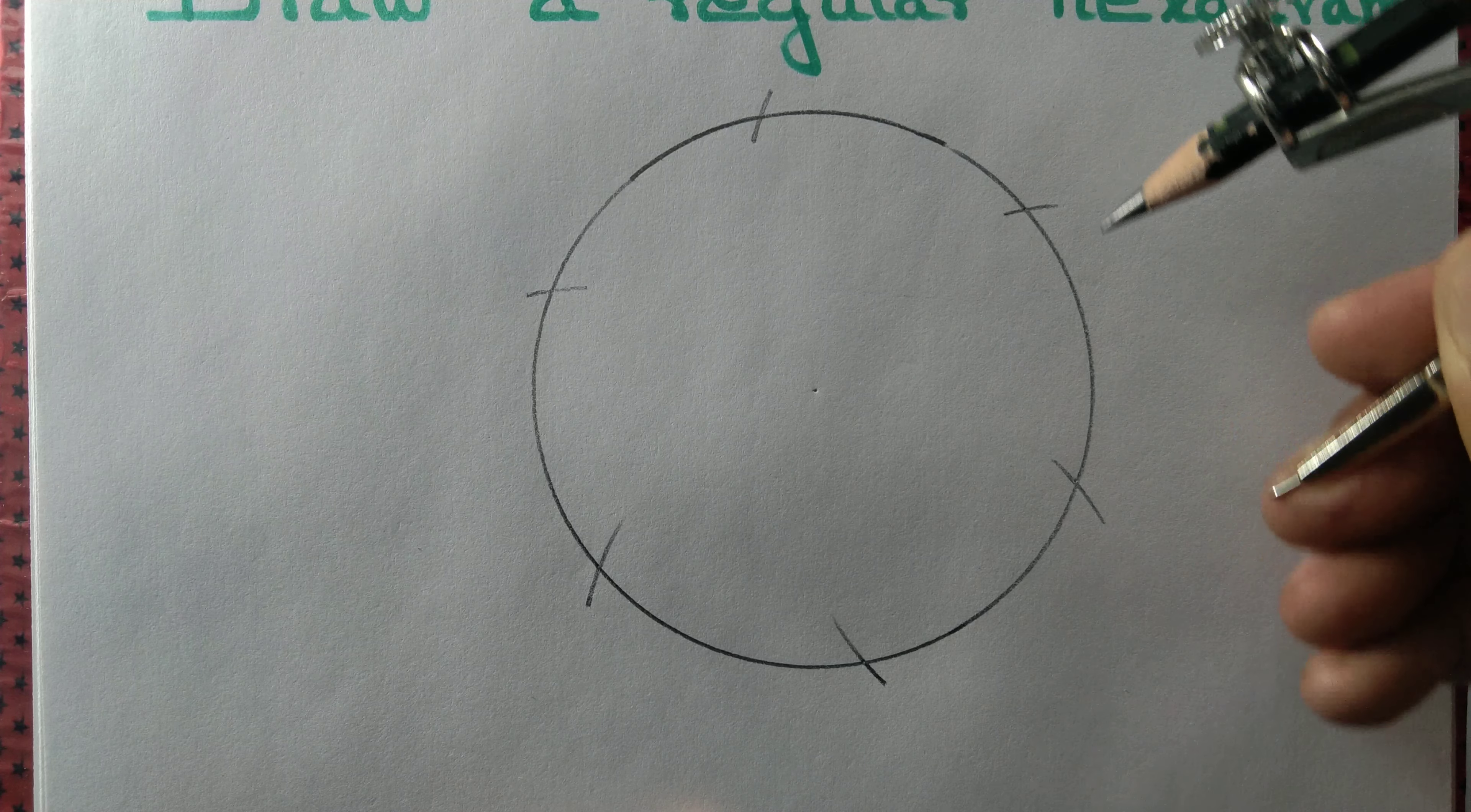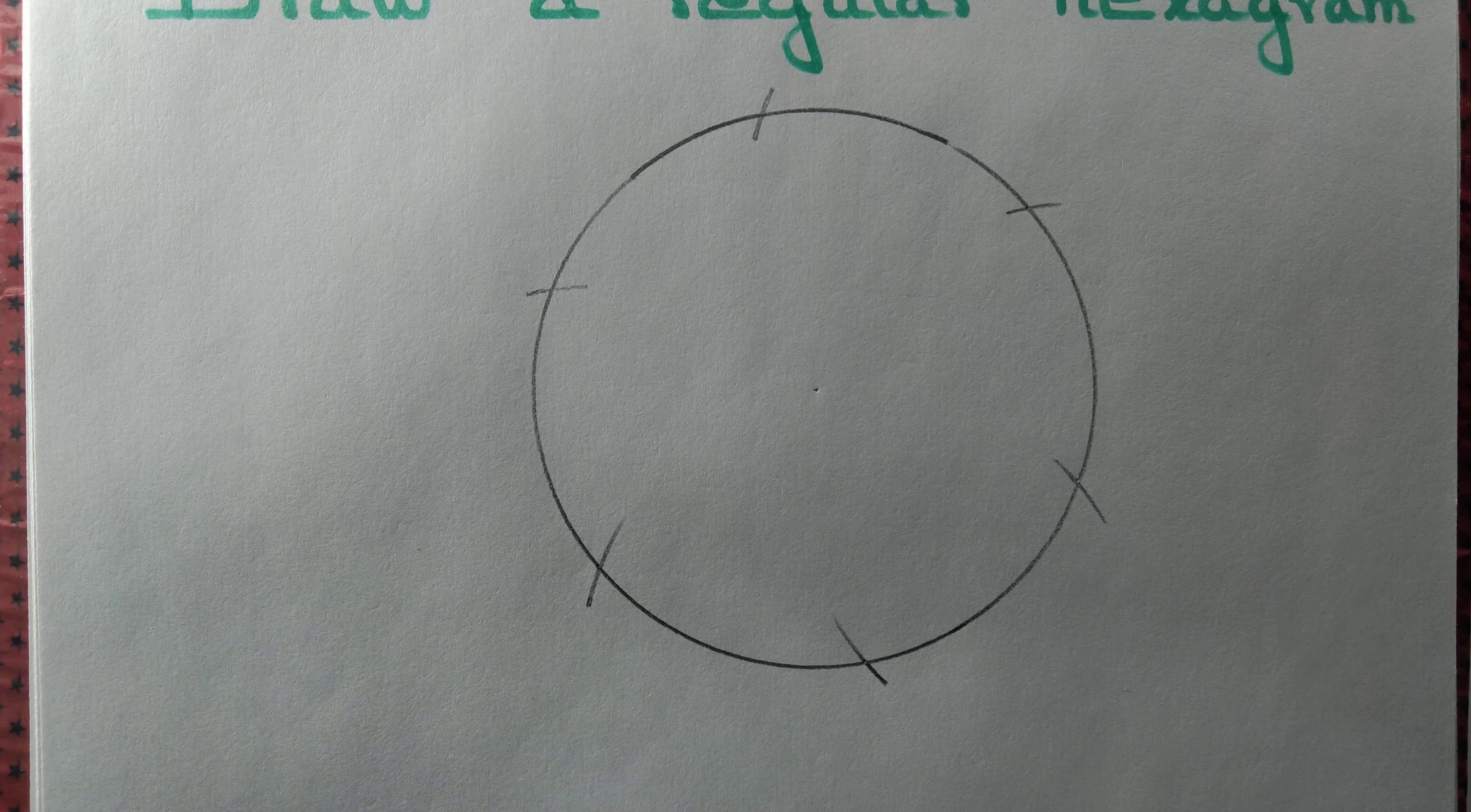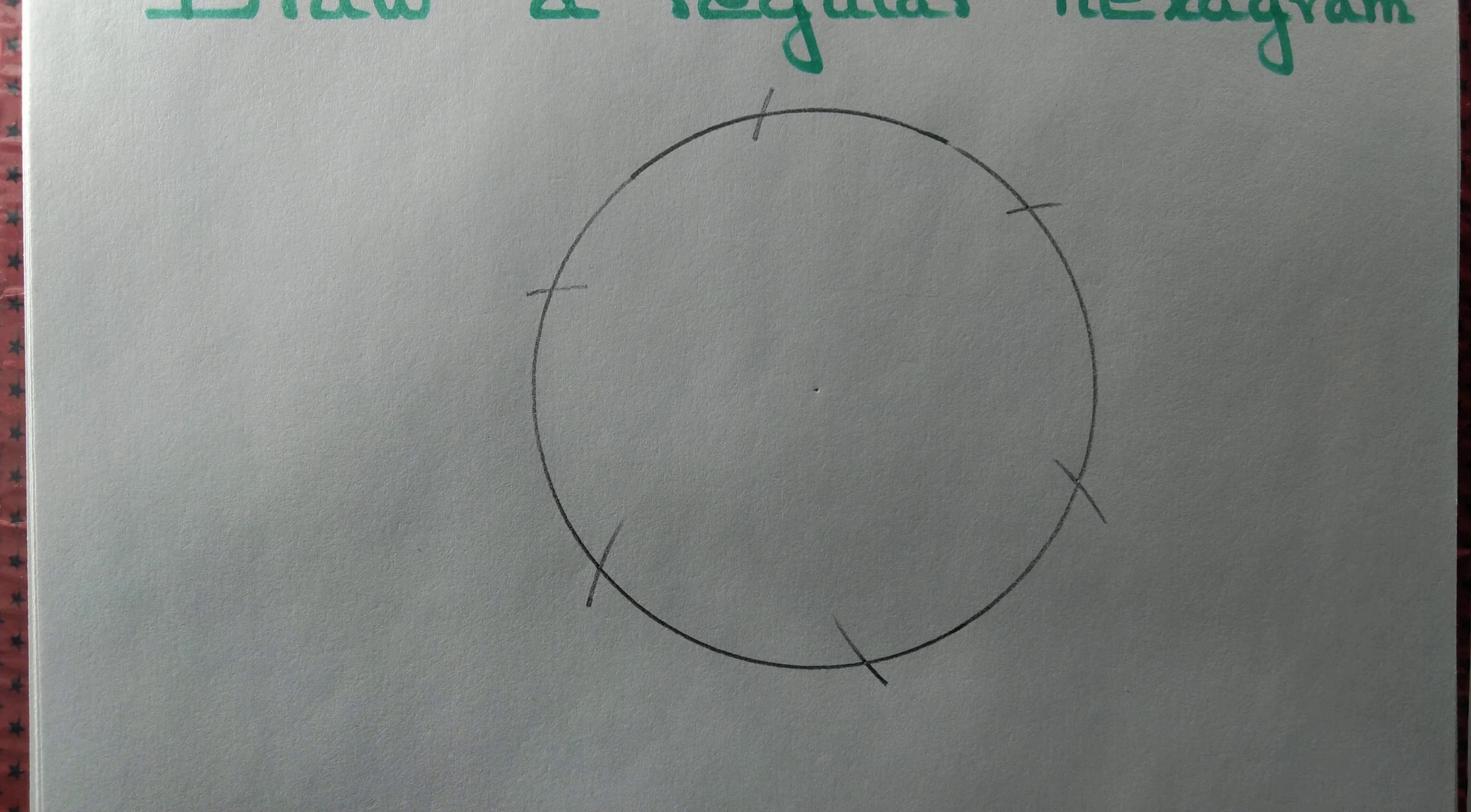So we have 1, 2, 3, 4, 5, 6 - six arcs that intersect the given circle.